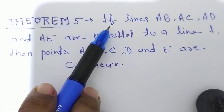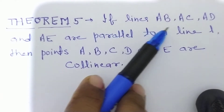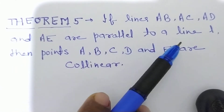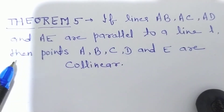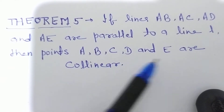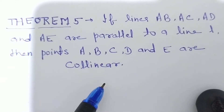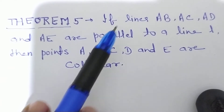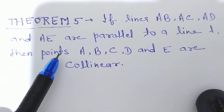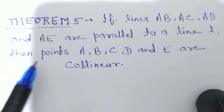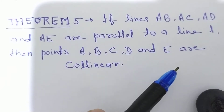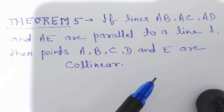If lines AB, AC, AD and AE are parallel to a line L, then points A, B, C, D and E are collinear. Agar lines AB, AC, AD aur AE parallel hain L ke, to jinne bhi points hain A, B, C, D and E, ye saare collinear honge.